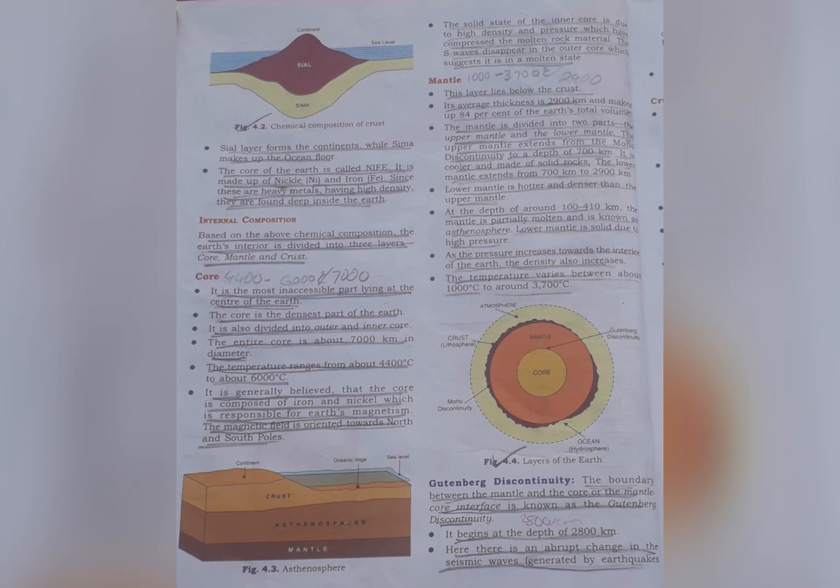The core is also divided into outer and inner core. The entire core is about 7,000 km in diameter. The temperature ranges from about 4,400°C to about 6,000°C. It is generally believed that the core is composed of iron and nickel, which is responsible for Earth's magnetism. The magnetic field is oriented towards the north and south poles. The solid state of the inner core is due to high density and pressure which have compressed the molten rock material. The S waves disappear in the outer core, which suggests it is in a molten state.